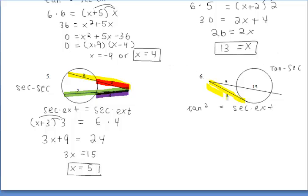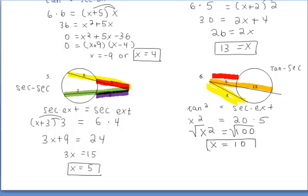And then finally, for number 6, we're working with a secant-tangent or tangent-secant power theorem. Remember, we're taking the tangent and multiplying it by itself. So we're doing x times x, which gives us x squared. And then we're setting that equal to the entire secant segment, which is 20, times the external part, which is 5. Taking the square root of both sides of the equation, we get that x has a value of 10.